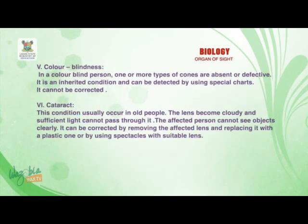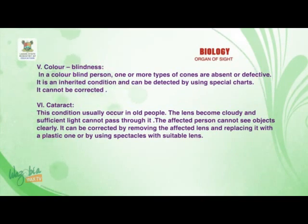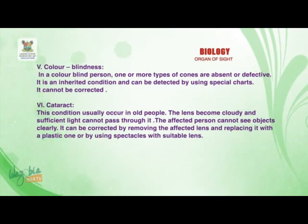The next defect is color blindness. In a colorblind person, one or more types of cones are absent or defective. It is an incurable condition and can be detected by using special charts. It cannot be corrected.